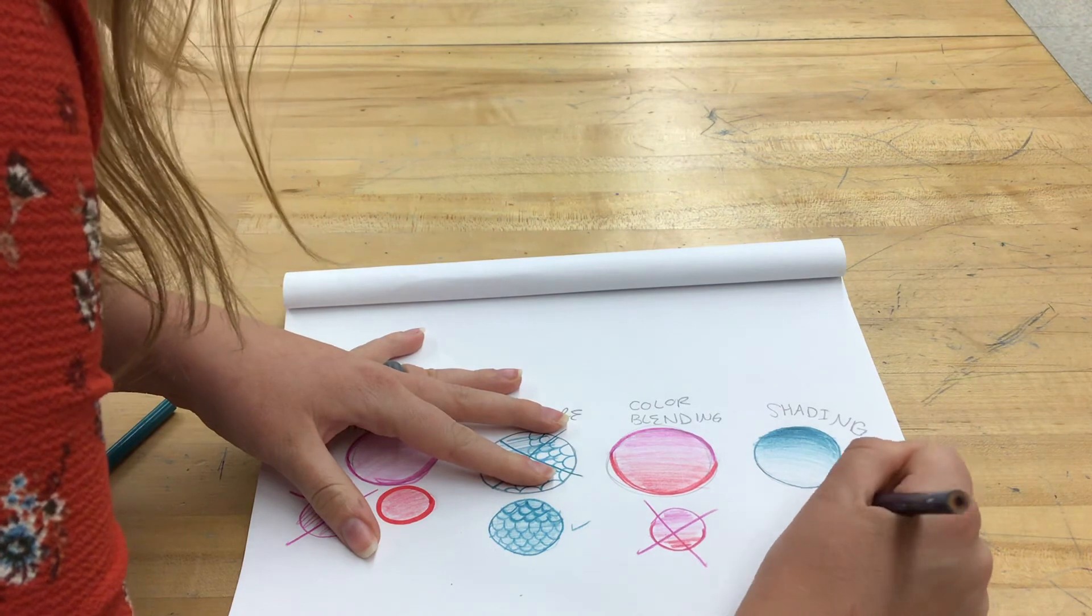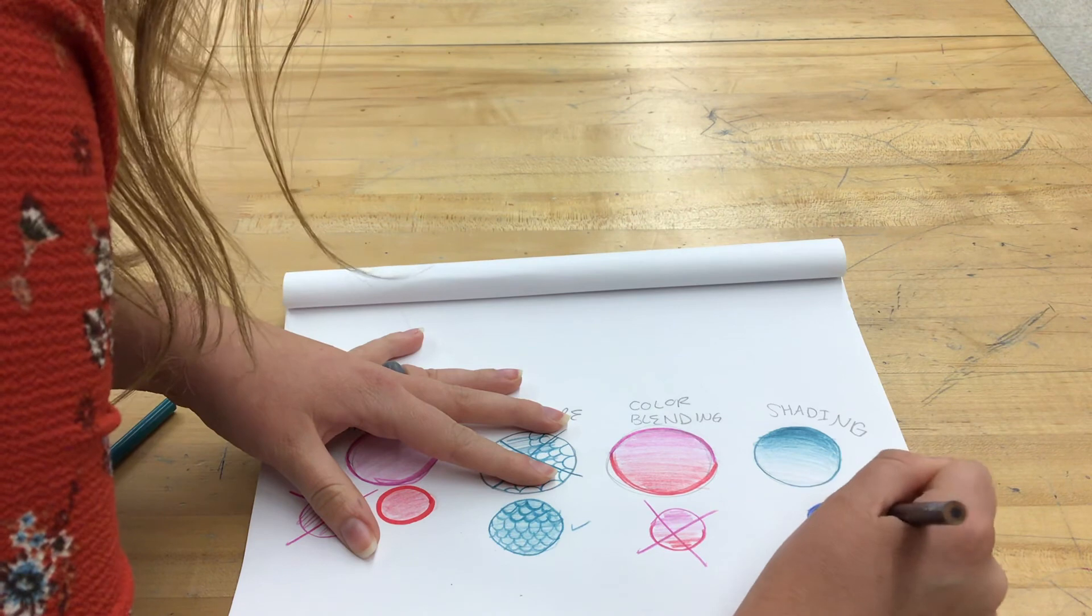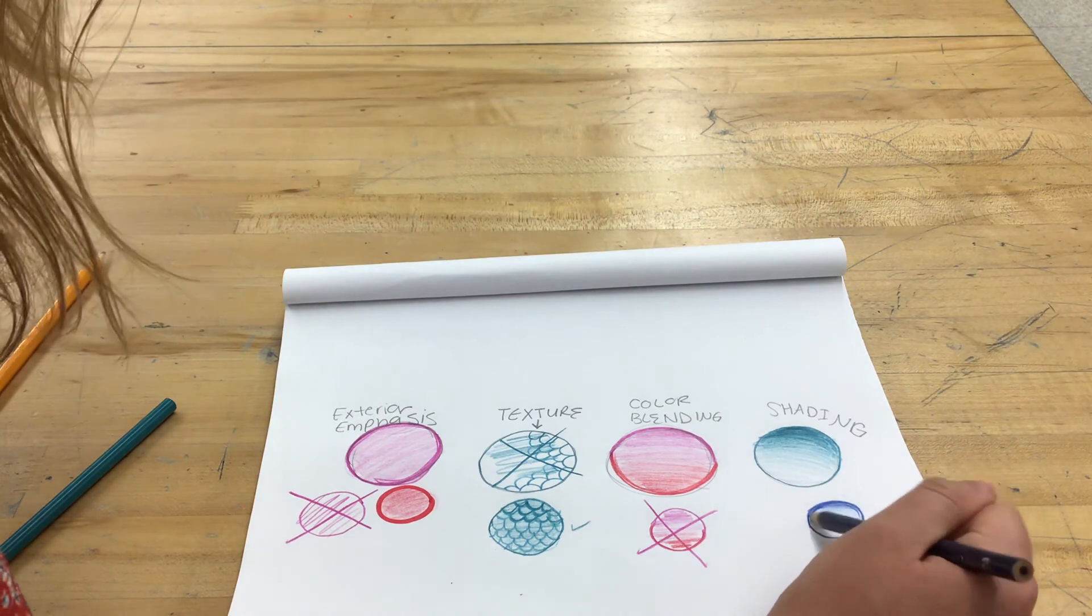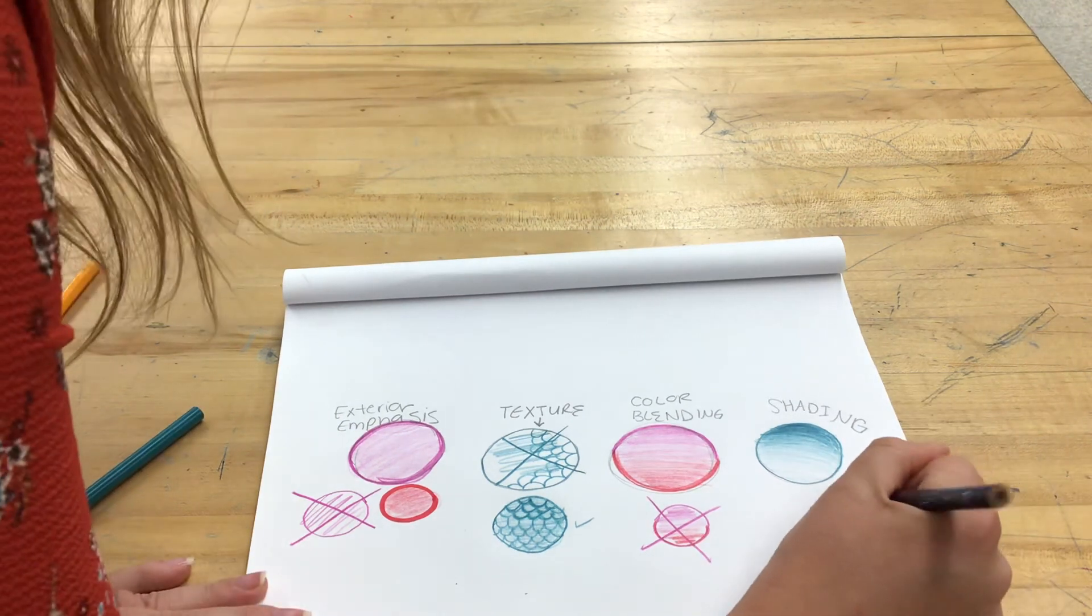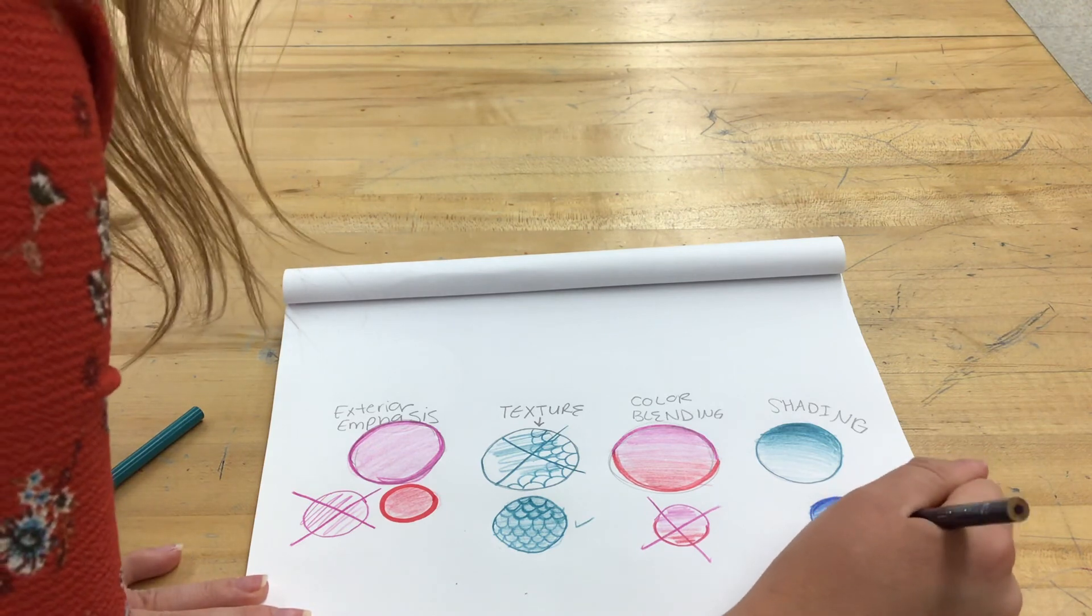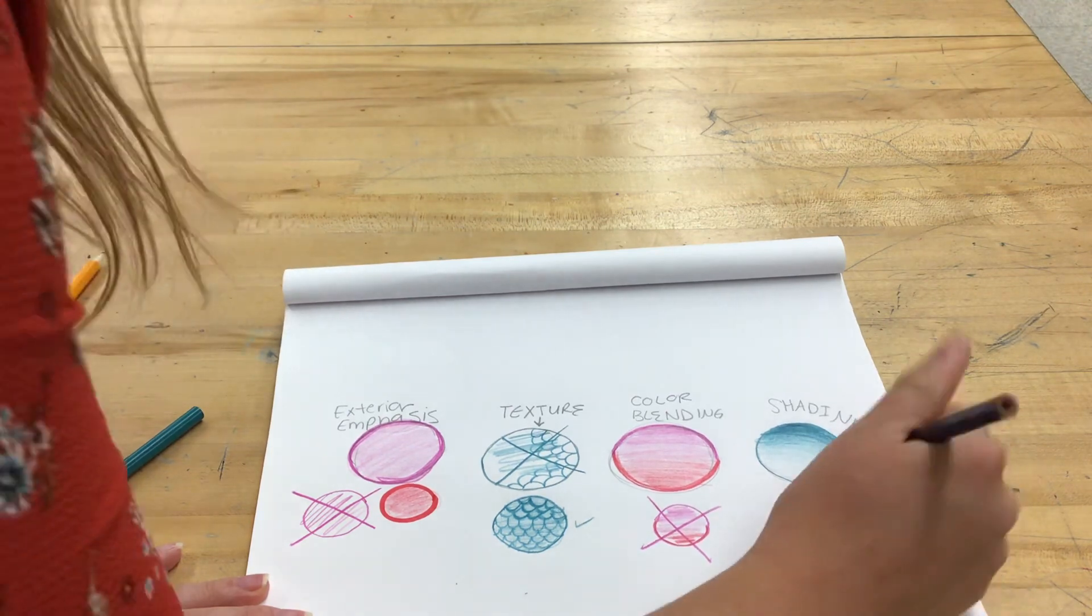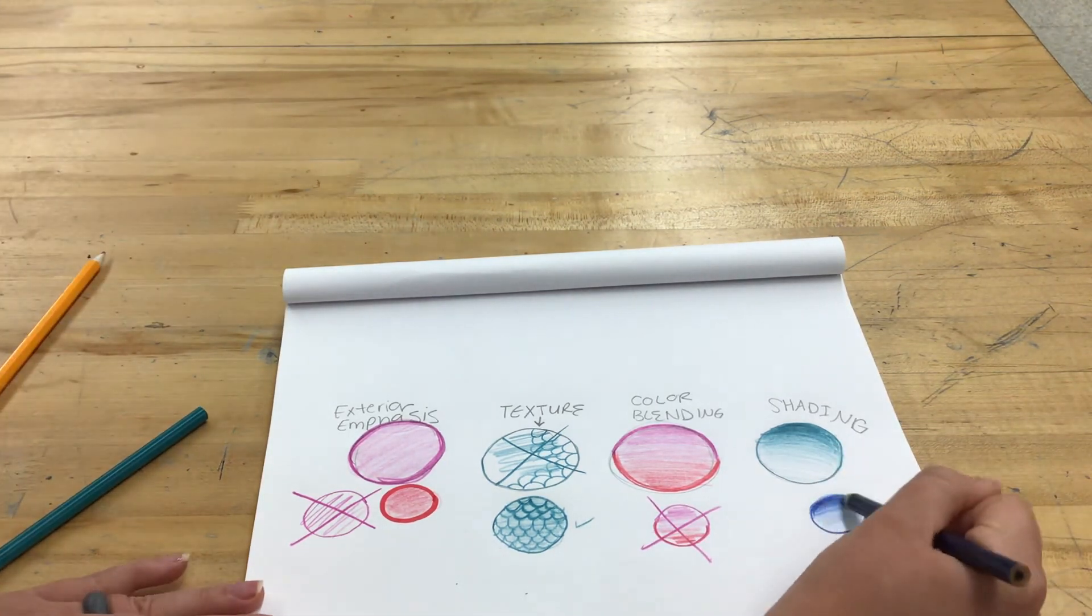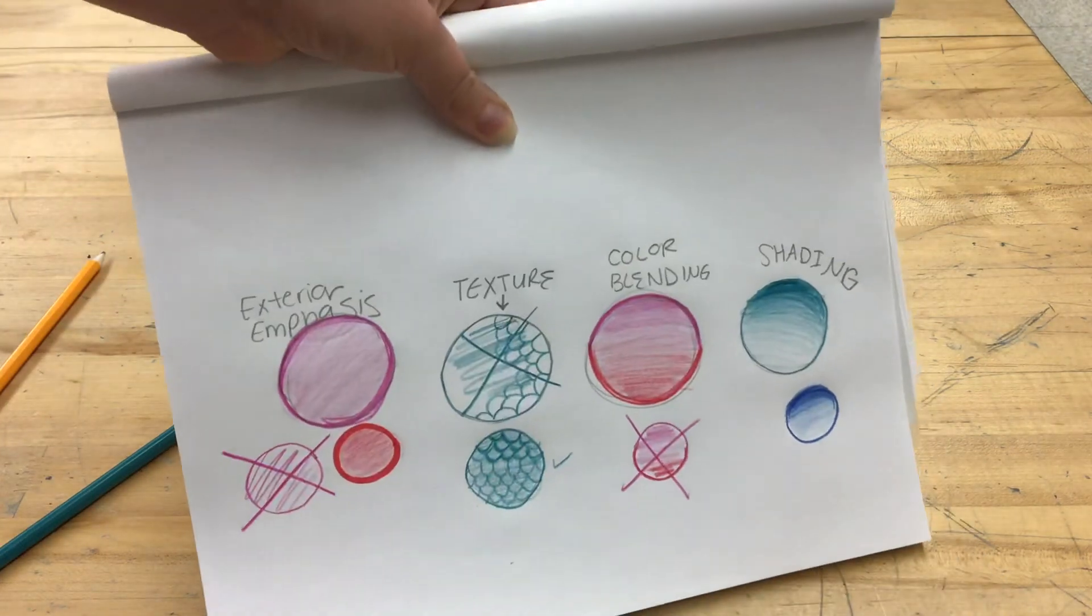So, I am going to start dark. And gradually get lighter. With a colored pencil, it might help to go over those dark values a couple different times. Until you get it just how you would like it.